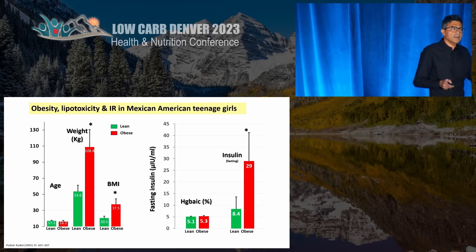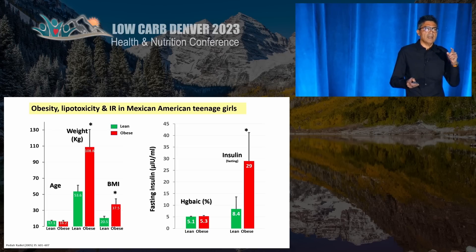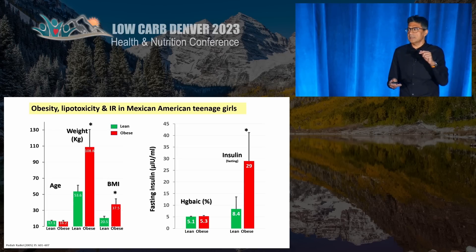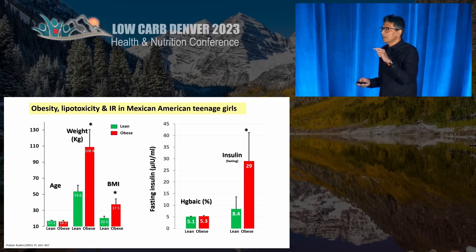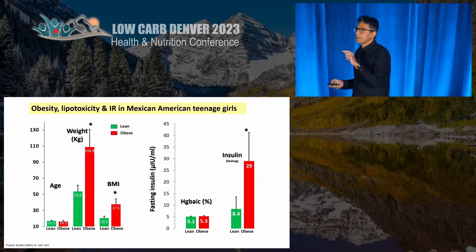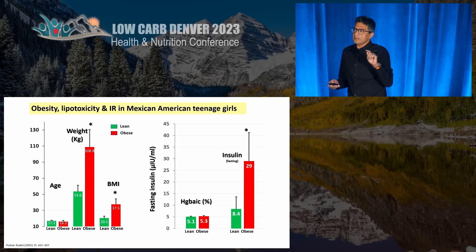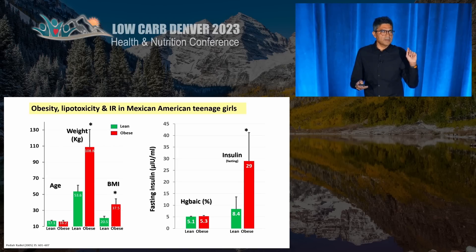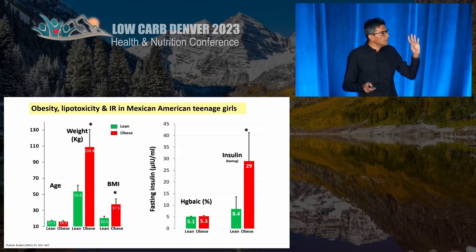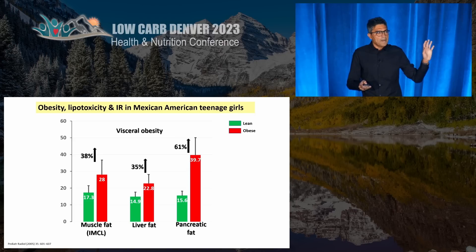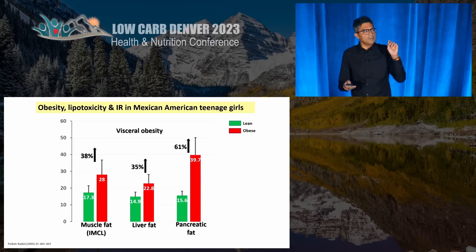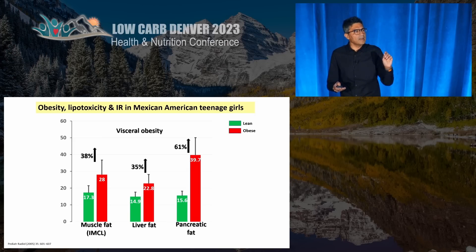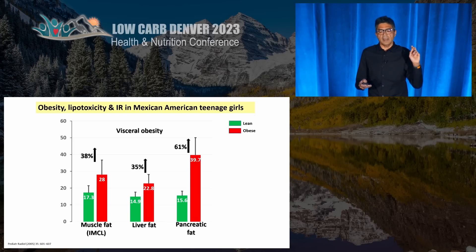One does not need to be in their 40s to get lipotoxicity. This is a study in teenage Mexican-American girls, aged 16 or 17, showing that when their weight goes up, they become insulin resistant. Not only do they get insulin resistant, but muscle fat, liver fat, and pancreatic fat go up dramatically even at this young age.